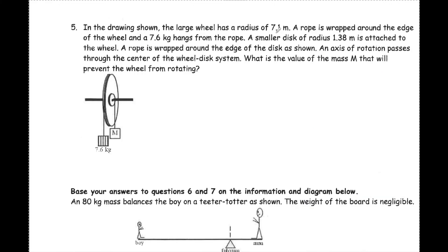We have a big wheel with a radius and a smaller wheel with a radius, and we want to know what M has to be so these objects will not spin. This is equilibrium. The torque of the 7.6 kilogram block equals the torque of the M block. Torque is F times R, and F is the weight, so MgR equals MgR. We have 7.6 times 10 times 7.1 equals M times 10 times 1.38. M equals 39 kilograms.